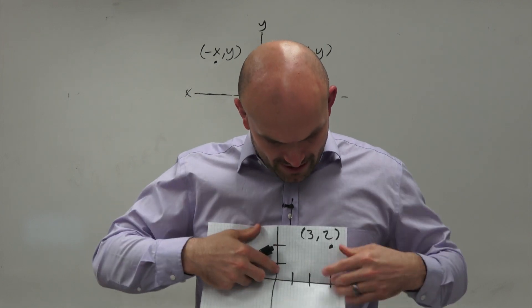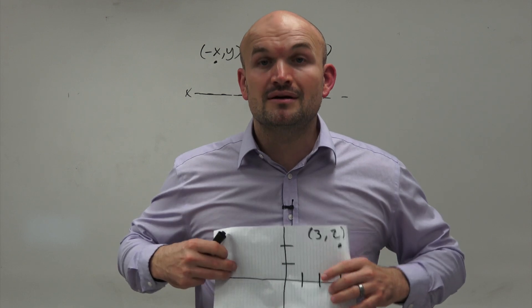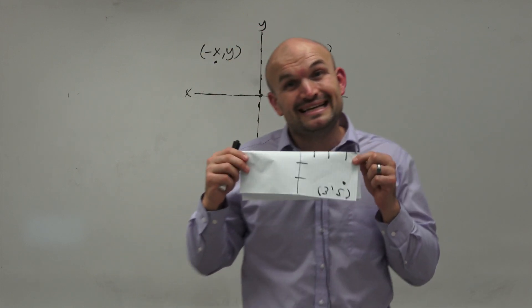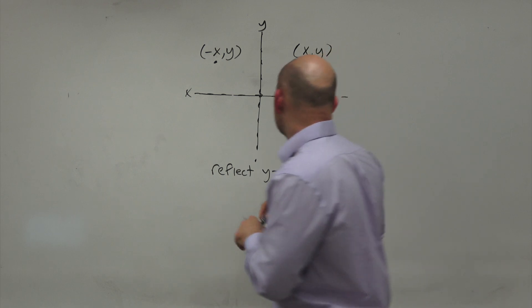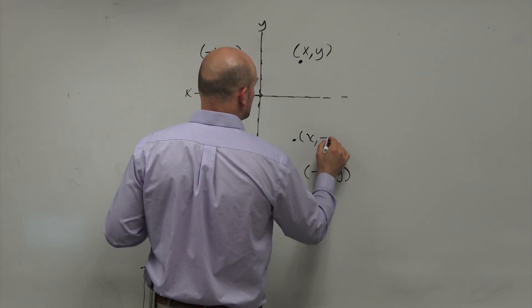And now you can see that the graph, the point is still 3 over, but now it's just being, instead of up 2, it's now down 2. So what's happening? Well, this point is being negated. The Y coordinate is being negated down here. So this point is being X, negative Y.